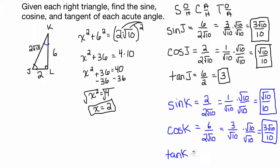And then the tangent of K — tangent is opposite over adjacent. For K, opposite is 2 and adjacent is 6. So it's 2 over 6, which reduces to 1 over 3.